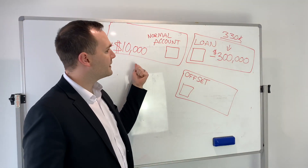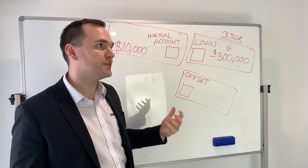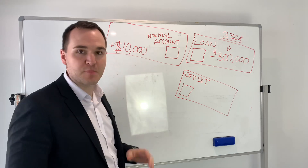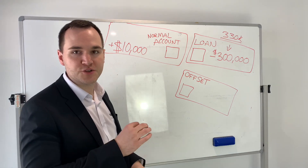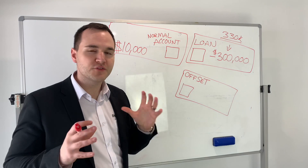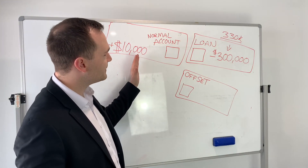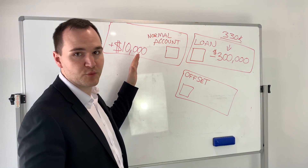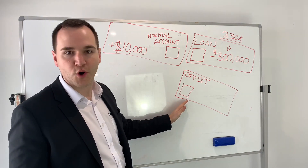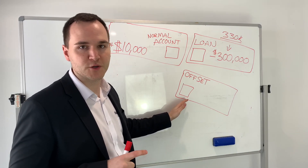Your normal account — let's say the one that you get paid into from your wage. Let's say you make minimum wage and you've got $10,000 as a buffer in your normal account. Essentially this is your normal account where your wage goes into, and then you've got your loan over here. You can also sometimes have an Offset account as well.